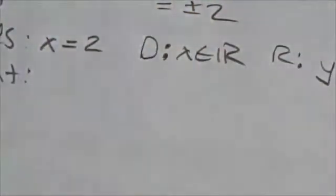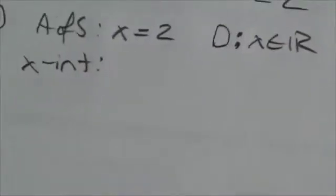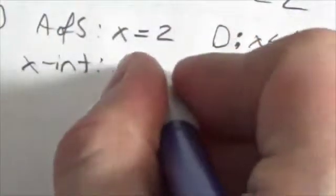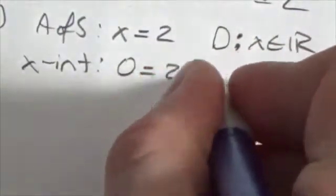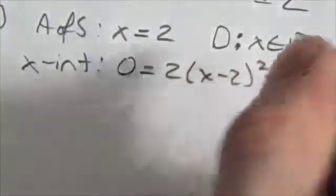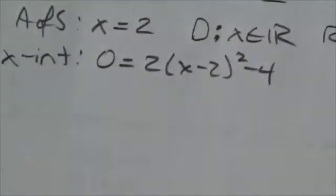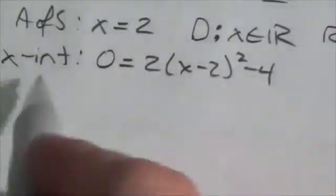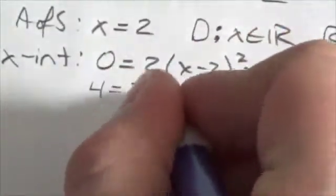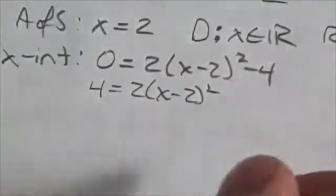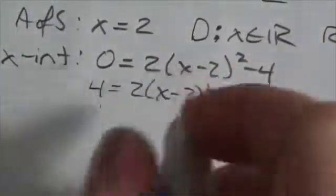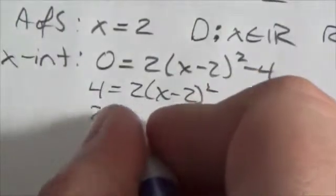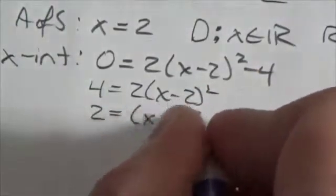For the x intercept, a little bit different. We're going to make the y coordinate equal to 0, which means 0 is equal to 2 x minus 2 squared minus 4. Now this actually becomes a quadratic equation that we've got to solve, but because it's in vertex form it's not that bad. I'm going to bring the 4 over first, so 4 is equal to 2 x minus 2 squared. Then I'm going to divide by the 2 to get 2 is equal to x minus 2 squared.